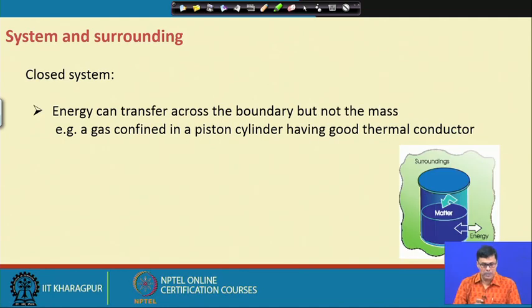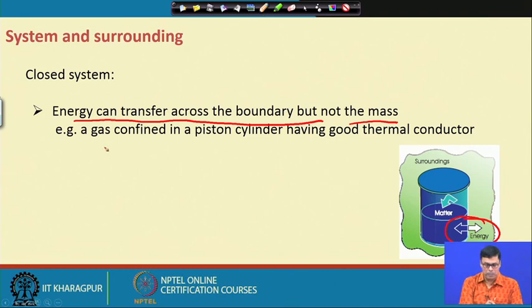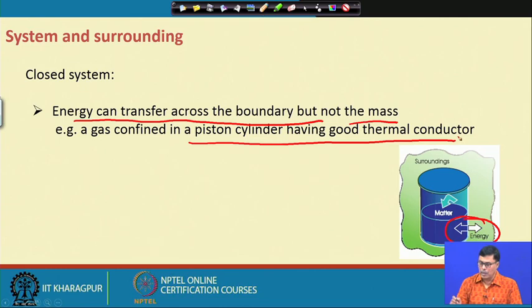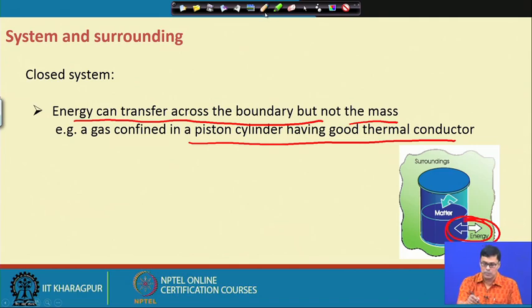In a closed system, energy can transfer across the boundary but not mass. An example is a gas confined in a piston-cylinder having a good thermal conductor. Energy transfer takes place due to the good conductivity of the material, but mass does not transfer. This is what we call a closed system.